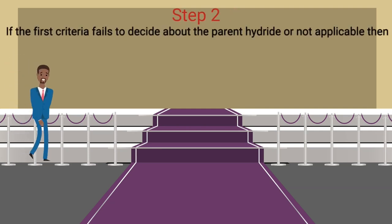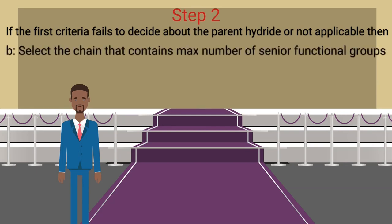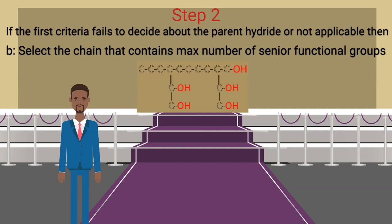If the first criteria fails, use the second criteria: look for the chain bound with the maximum number of senior characteristic groups. For example, in this structure there are six chains and the main functional group is the hydroxyl group — all chains are attached to the same functional group, so criteria 1 cannot decide. Among these six chains, we select the chain connected to the maximum number of functional groups. Chain four has the most hydroxyl groups — four — so it will be selected as the parent hydride. As this chain contains ten carbons, the root word will be 'deca'.